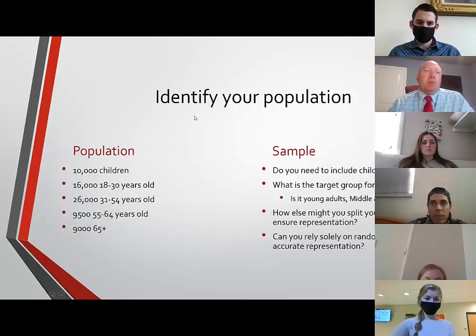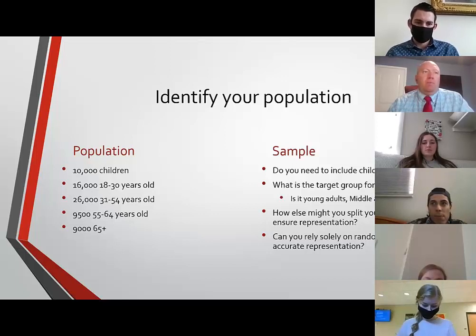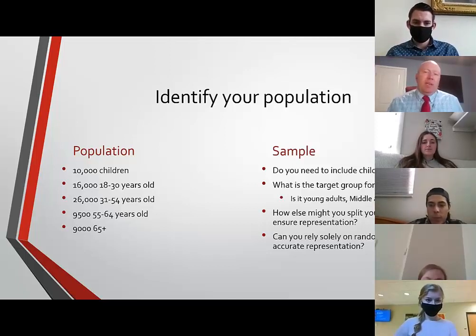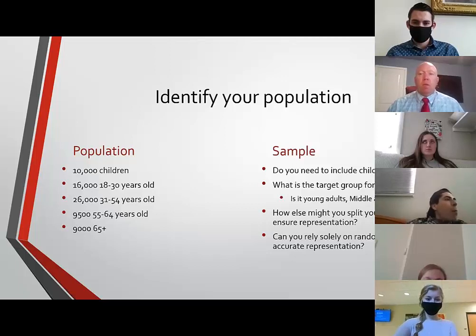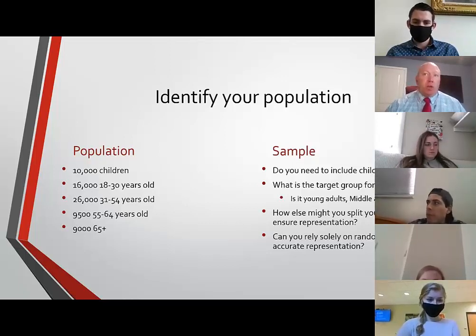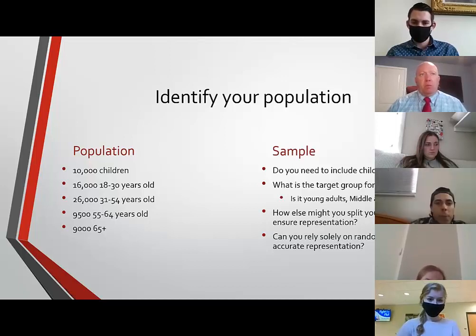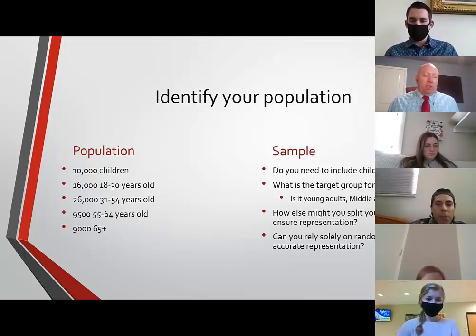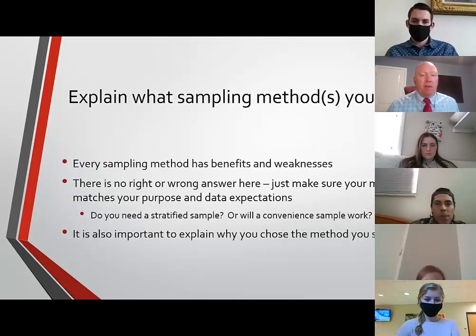Here are some things to think about. If your population based on age had 10,000 kids, 16,000 young adults, 26,000 middle-aged adults, and then some older folks, you'd ask yourself: do I need to include children in my population group? That depends on what you're trying to address with your evaluation. What's the target group? Is there a subgroup you want more information about? How else could you split up your group? We need adequate representation, and you must ask whether you can just rely on randomness to give you a good sample — you may or you may not. So that's identifying your population.